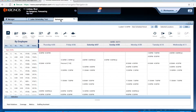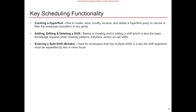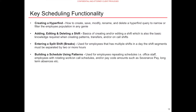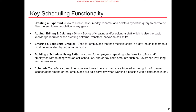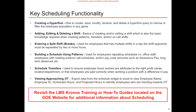Navigate to the Schedules widget. In order to build your schedule in Kronos, you should be familiar with the following system capabilities: creating a hyperfine to filter the employee population in view; the basics of adding, editing, and deleting a shift in the scheduler; how to enter a split shift when an employee works multiple shifts in a day, including how to enter a break; building a schedule using patterns, which should be used for repeating schedules only, such as office staff; and schedule transfers, to ensure employee hours worked are attributed to the correct profit center, location, and department. Schedule transfers are also important when an employee works in a position with a difference in pay. Additionally, you should understand viewing and approaching overtime, and how to export data from the schedule widget to Excel to view employee name, employee ID, scheduled hours, and projected hours to identify employees trending towards overtime. To review this functionality in more detail, visit the GOE website for detailed how-to documentation.